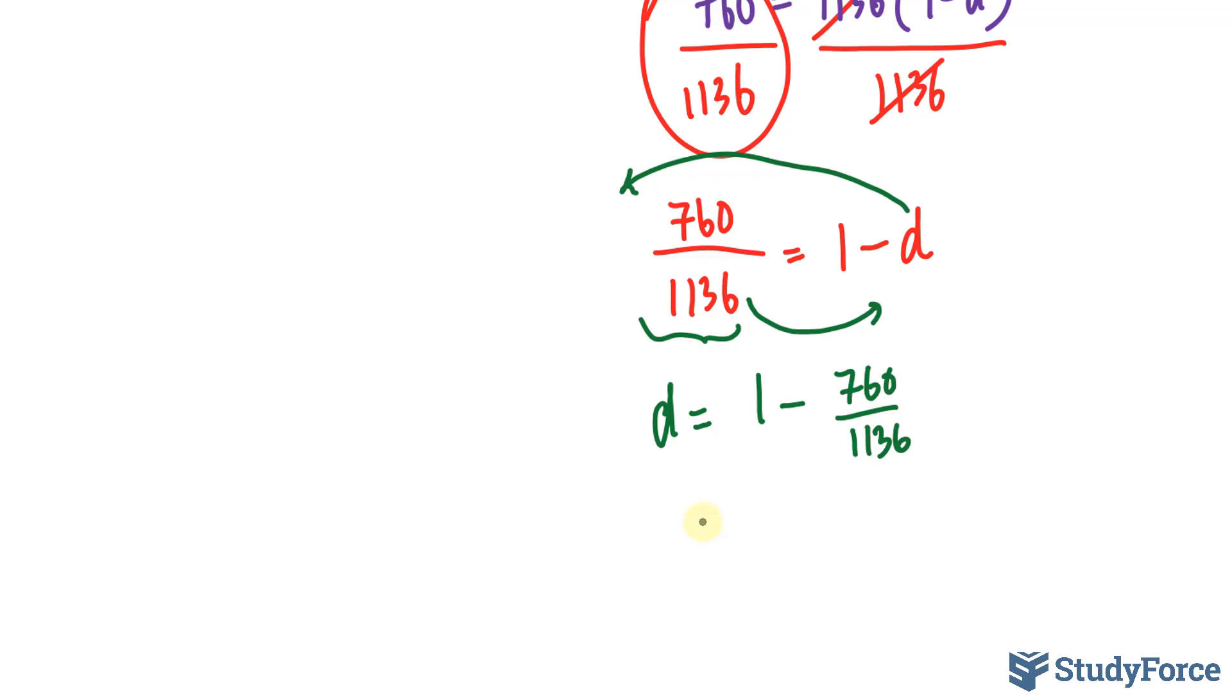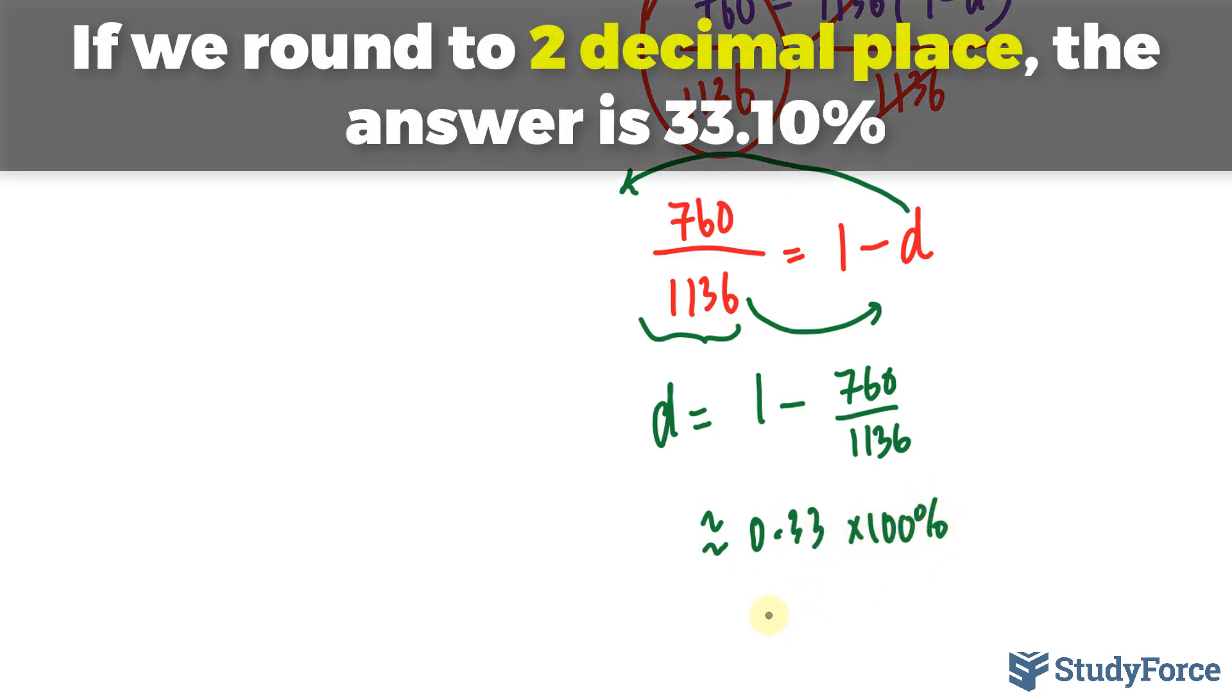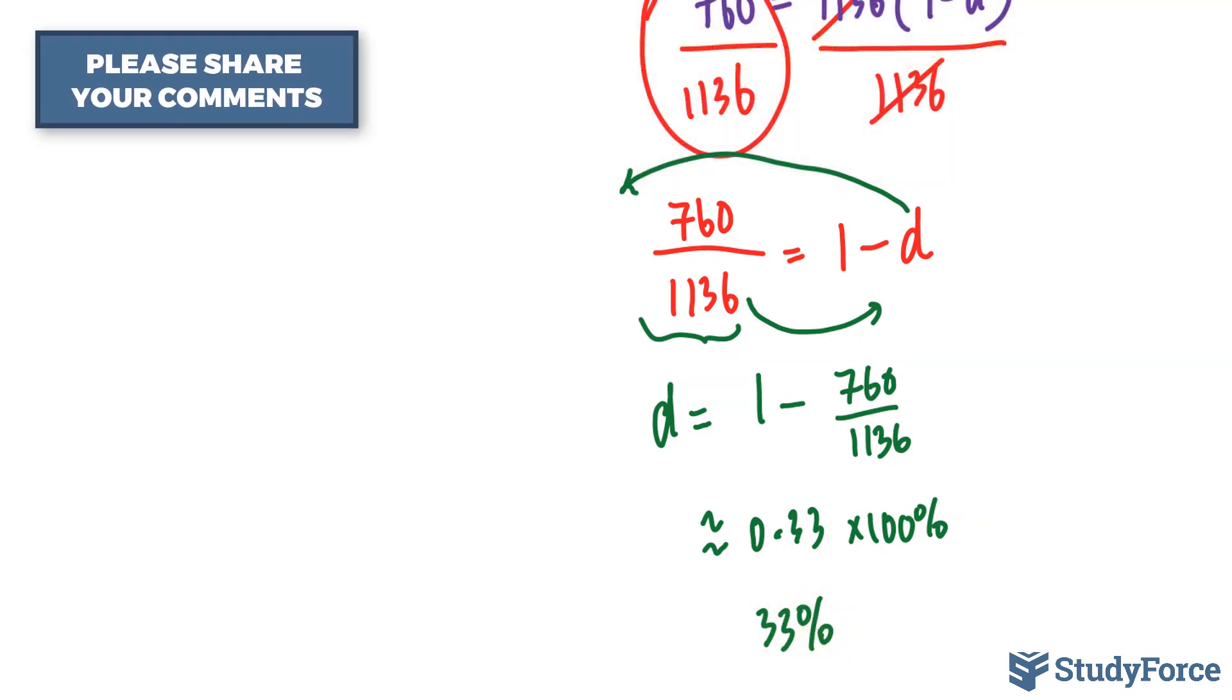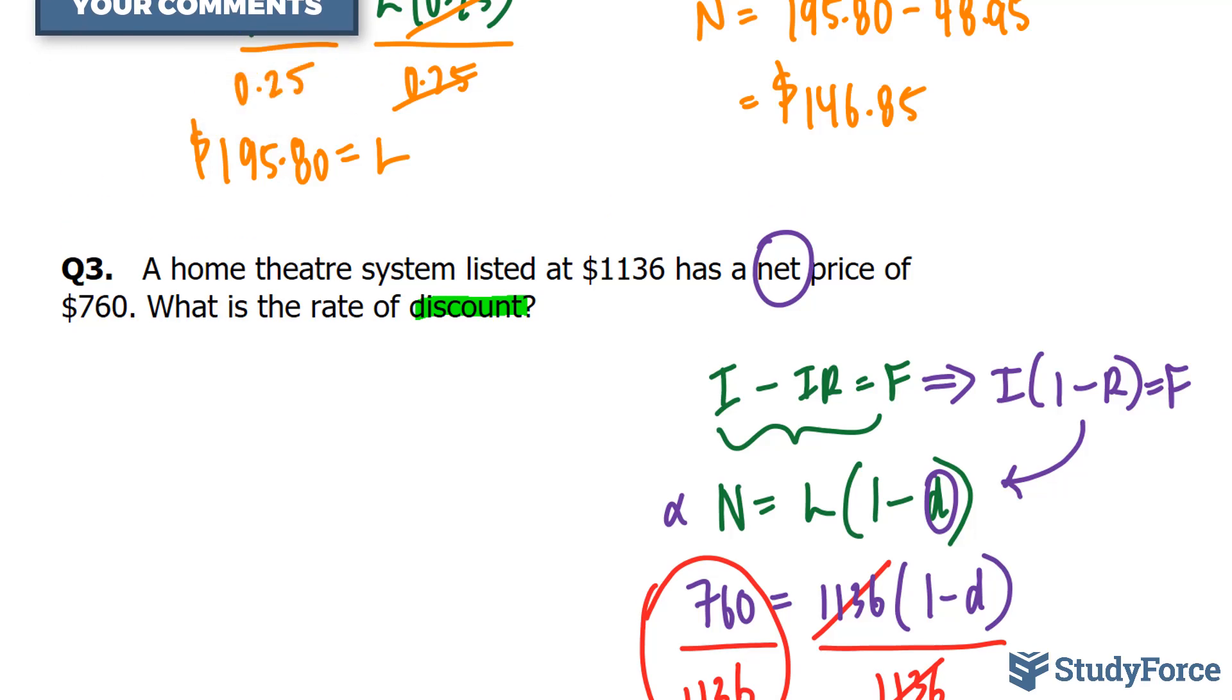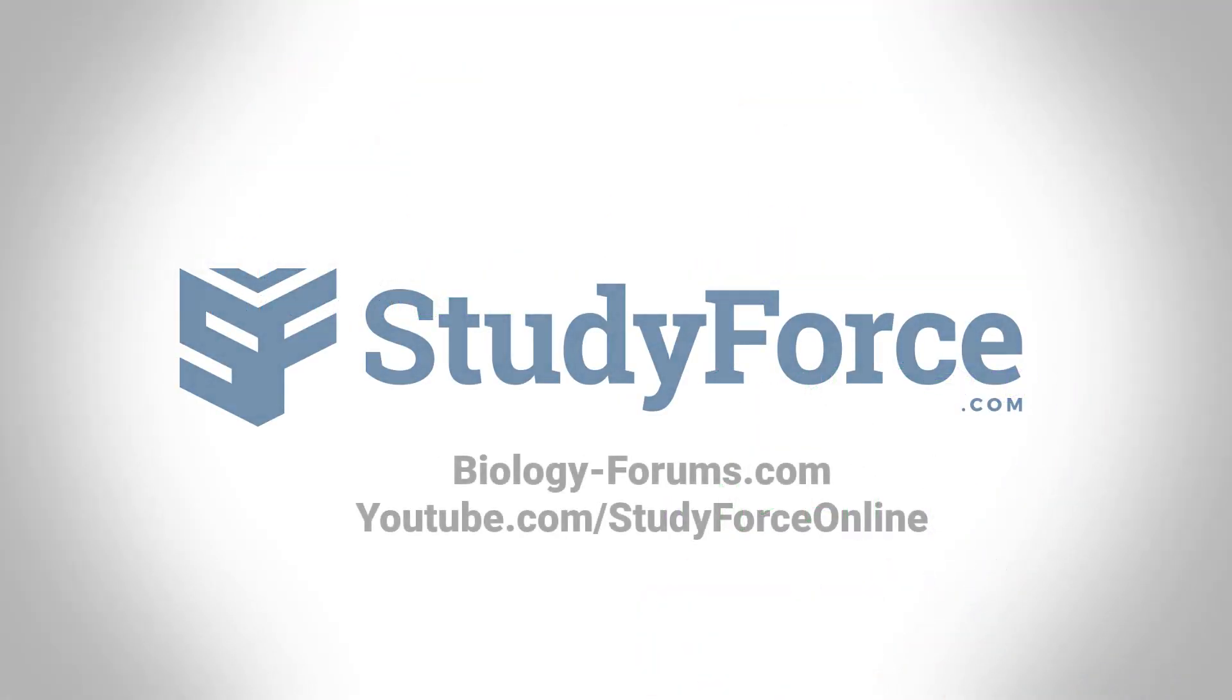We end up with a value of roughly 0.33, which then gets multiplied by 100%, and we end up with a rate of discount of 33%. Now that you've seen three examples, if you have any further questions, leave them in the comment section below. And as always, thank you for watching.